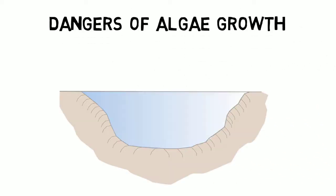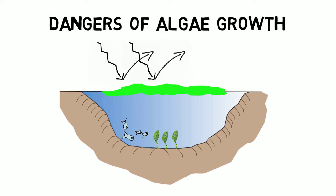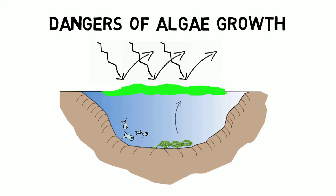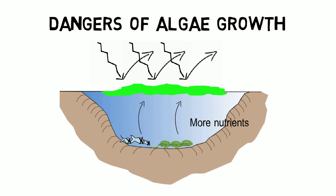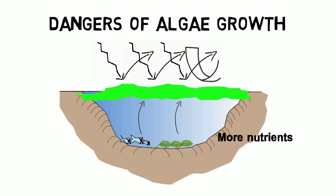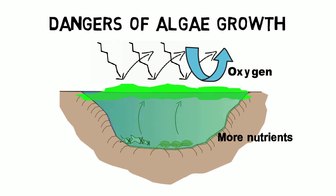Too much algae bloom endangers the overall health of a pond as it prevents sunlight from reaching plants underneath the water surface. Consequently, photosynthetic processes stop so that these plants die and provide additional nutrients for more algae bloom. Even worse, without aquatic plants, the oxygen level in the pond decreases more and more until fish suffocate and die as well. Dying sea life provides again more nutrients for enhanced algae growth, and more and more algae bloom also prevents oxygen from entering the pond on the water surface until the pond completely turns over.